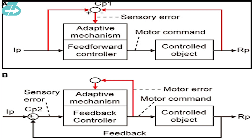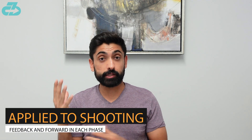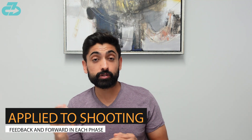Feedback is more reactive — it's based on what's already happened and then correcting it — whereas feed-forward is more of a predictive model. The two phases that are normally most analyzed are the last phase, the outcome: did the ball go in the net? Or more detailed — was it short, was it long, was it left versus right? Picking up those patterns provides data points as feedback.